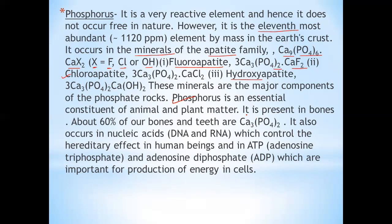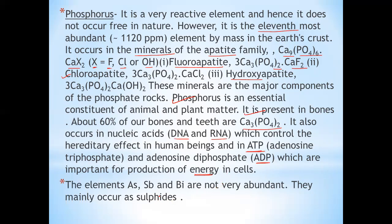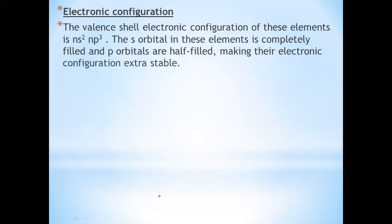Occurrence of these elements. The first member, nitrogen, exists as diatomic gas N2. It makes about 78% by volume of the atmosphere. It is only the 33rd most abundant element by mass in the earth's crust. It occurs as nitrates, that is sodium nitrate and potassium nitrate.